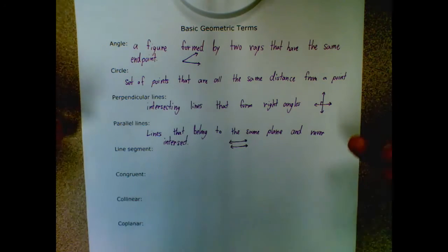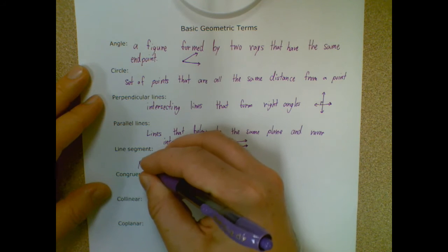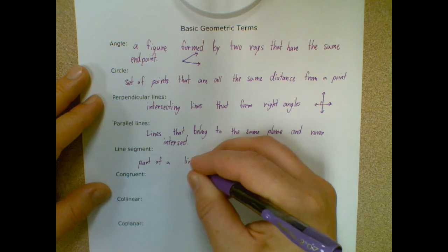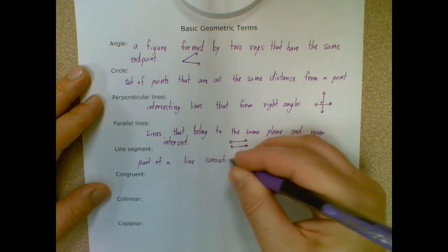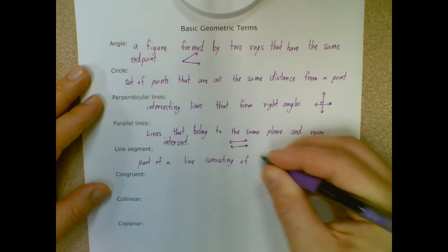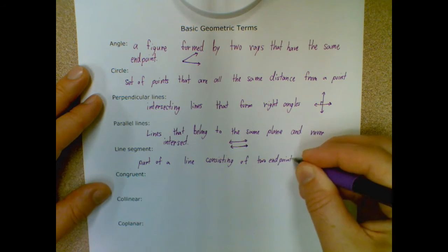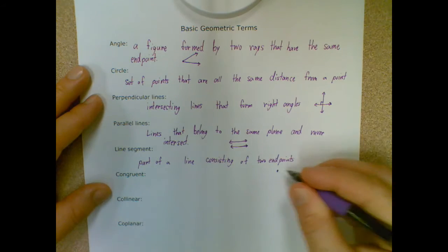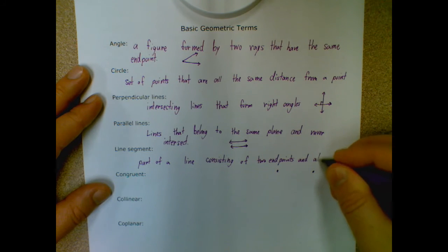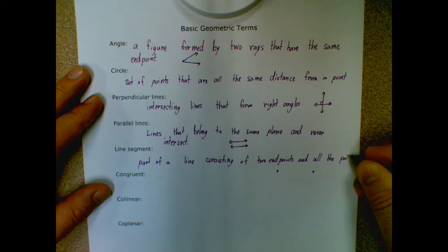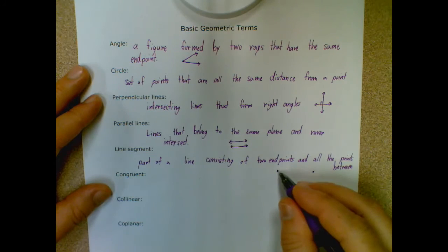A line segment — we did talk about this, so remember the key here is it's part of a line consisting of two endpoints and all the points between them.